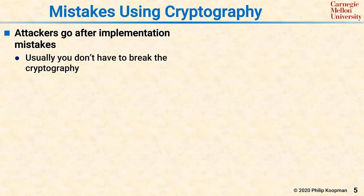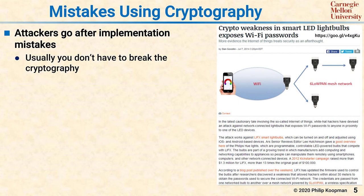Another common source of vulnerabilities is mistakes in using cryptography. The cryptographic math might be just fine, but the way it's deployed has problems that are more easily attacked than by actually breaking the crypto. As an example, there are some smart light bulbs that have to set up networks — you program the first light bulb, and you don't want to have to connect and reprogram every single light bulb. The light bulb maker solved this by having the first light bulb you install automatically configure any other light bulb installed in your house.